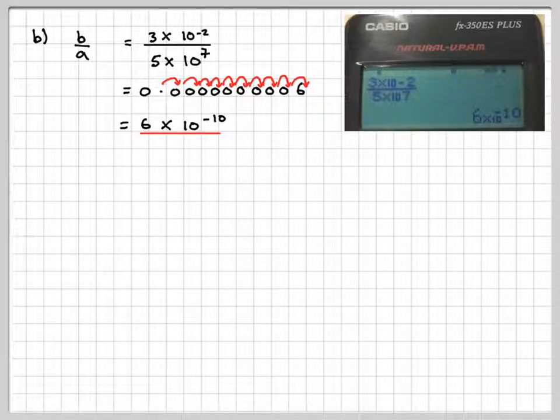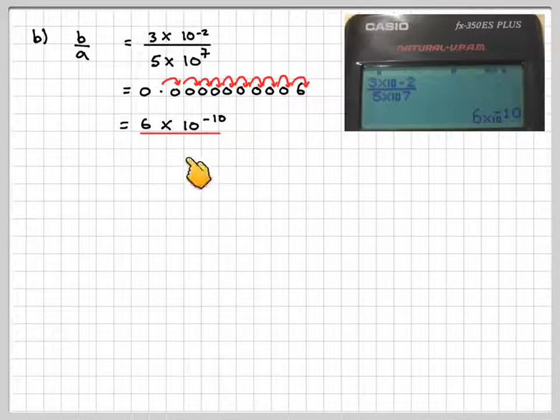So I've moved it minus 10. This is what we say, because I've moved it that way this time. So the final answer is 6 times 10 to the minus 10. Now we're lucky this calculator gave the answer like this. Sometimes some calculators will just give the answer like this. So we need to know how to go from this step to this step.